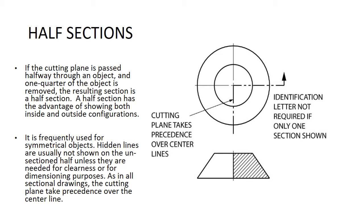You can see where I've lined it up, we're going to take from the outside to the center. The cutting plane line takes precedence over the center lines. The identification letter is not required if only one section is shown. It is frequently used for symmetrical objects. Hidden lines are usually not shown on the unsectioned half unless they are needed for clearances or for dimensioning purposes. As in all sectional drawings, the cutting plane takes precedence over the center line.